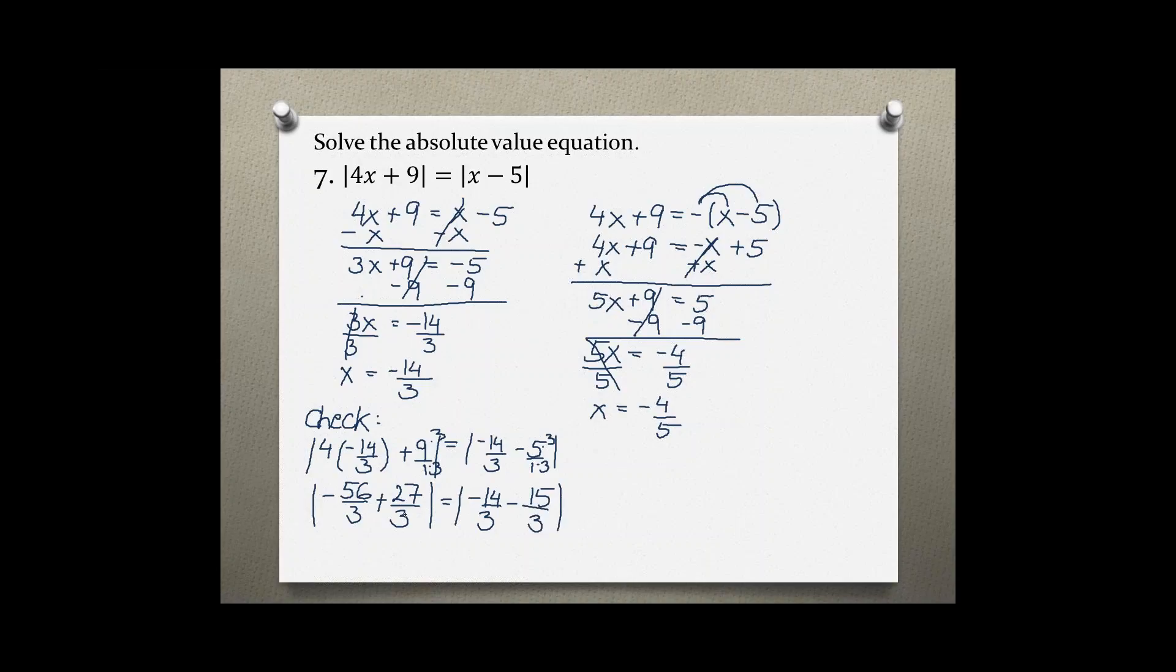Now I can actually do this addition, so negative 56 plus 27 gives me negative 29 over 3. And on the right side, negative 14 minus 15 also gives me negative 29 over 3. Taking the absolute value of both of these gives me a positive fractional value, so 29 over 3 equals 29 over 3, which is a true statement.